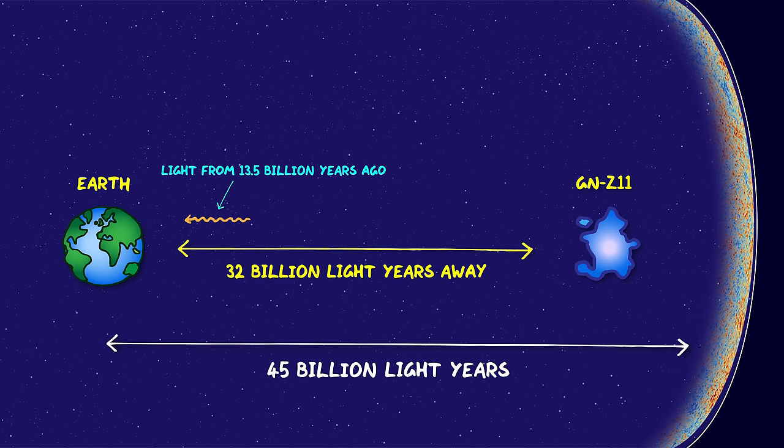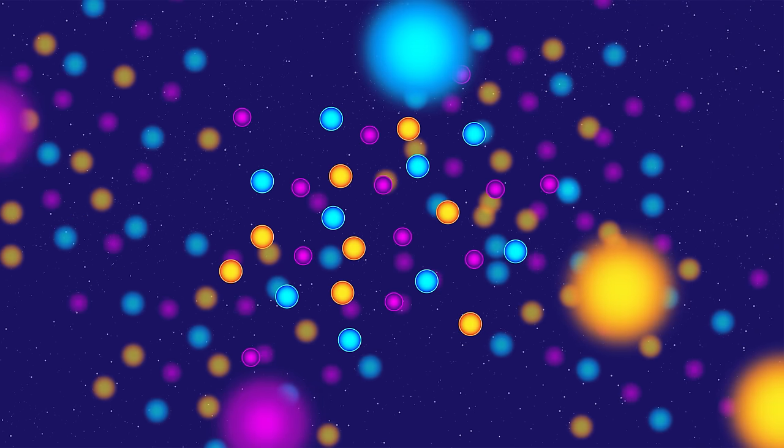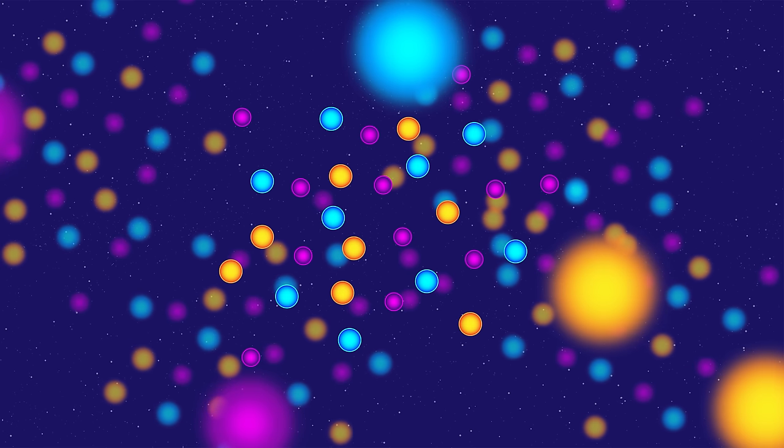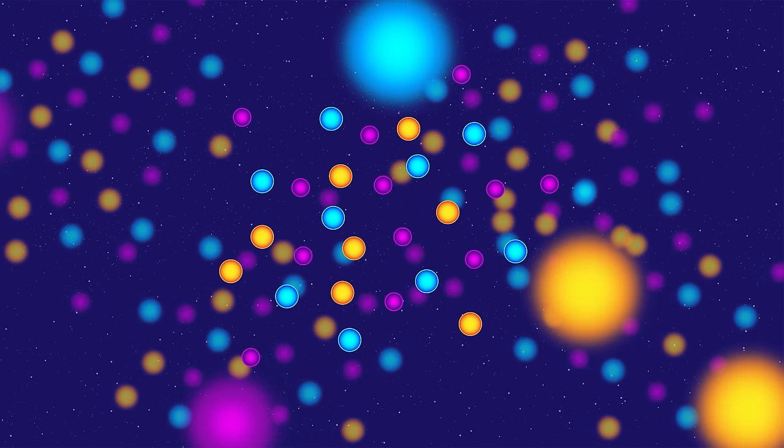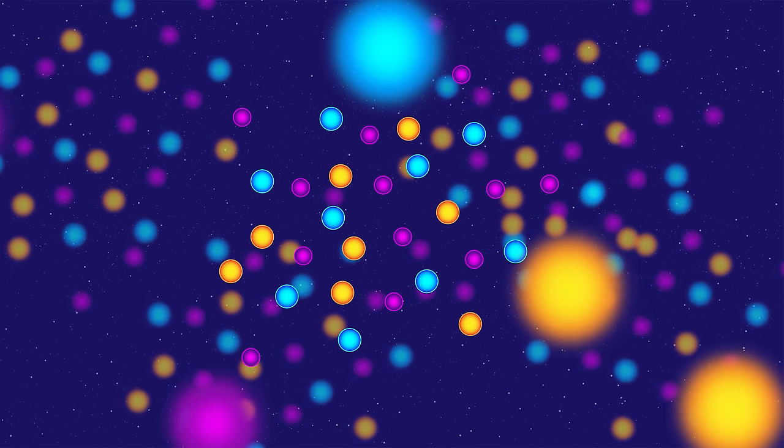So today we observe galaxies where they are now, but as they were millions or billions of years ago. To make this concrete, let's tell the story of us and this galaxy. At the Big Bang, the atoms that will end up making us and GNZ 11 were right next to each other because everything in the observable universe was packed into a tiny volume.